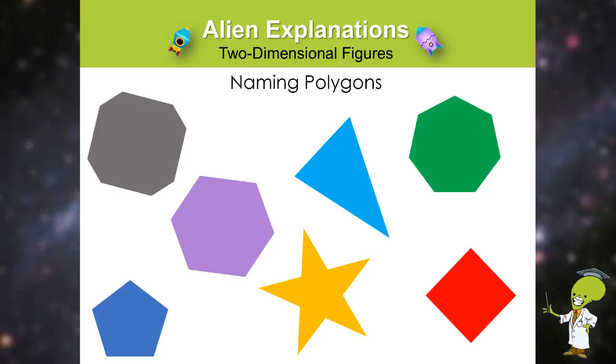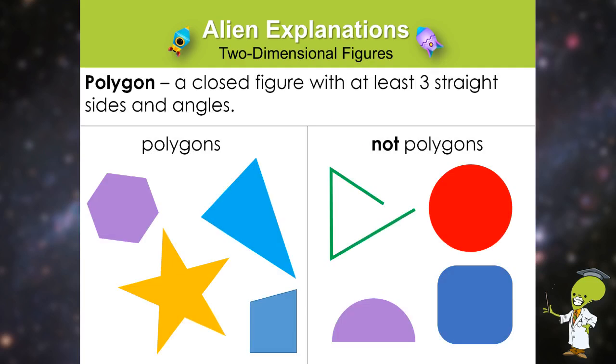Let's review how we name polygons. A polygon is a closed figure with at least three straight sides and angles.